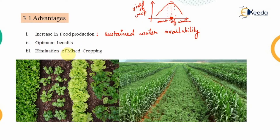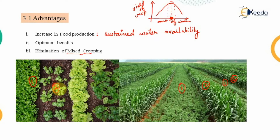The third advantage is the elimination of mixed cropping. As you can see in the diagram, this field has different rows of different crops — alternate rows of different crops growing together. Similarly in the left-side picture, there are four different types of crops grown on the same field. Sowing different crops on the same field at the same time is known as mixed cropping.